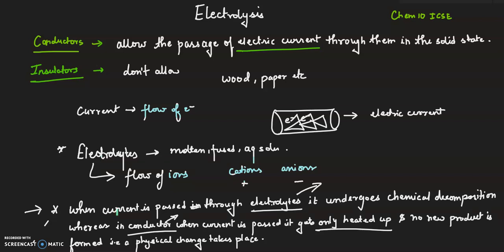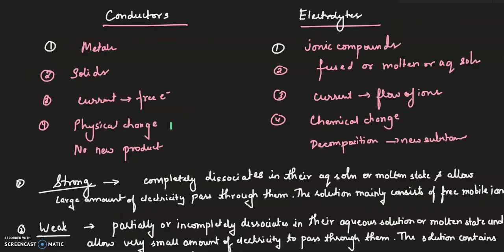When current is passed through electrolytes, it undergoes chemical decomposition. There is a chemical change taking place when current passes through electrolytes. Whereas in conductors, when current is passed, it only gets heated up and no new product is formed. That is, a physical change takes place.